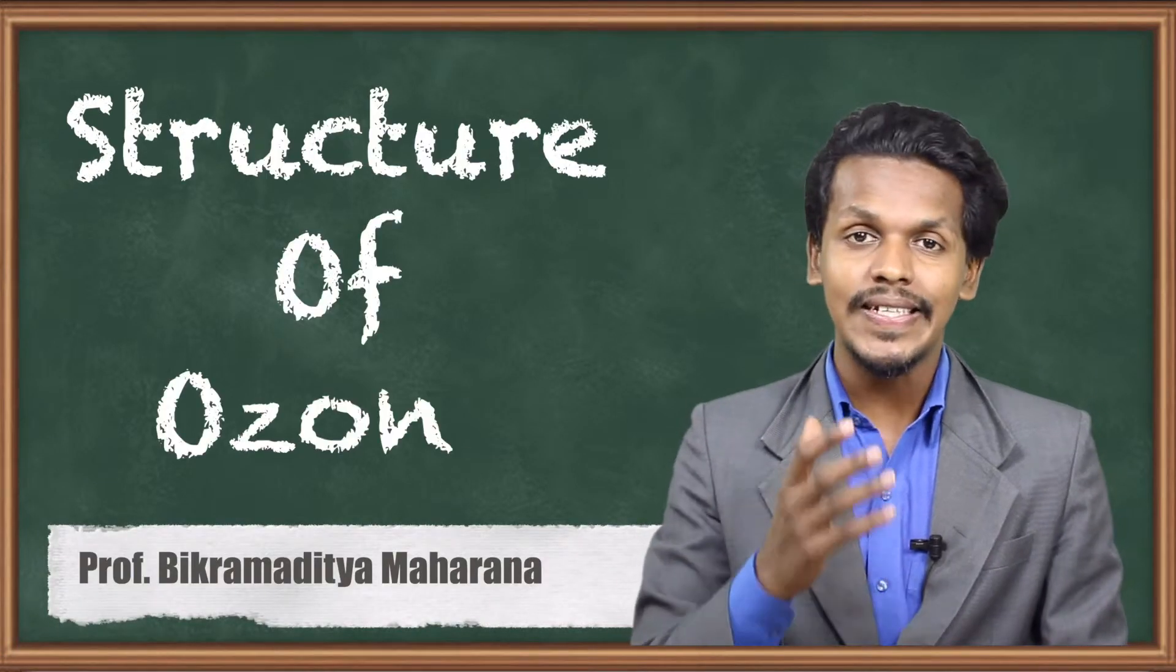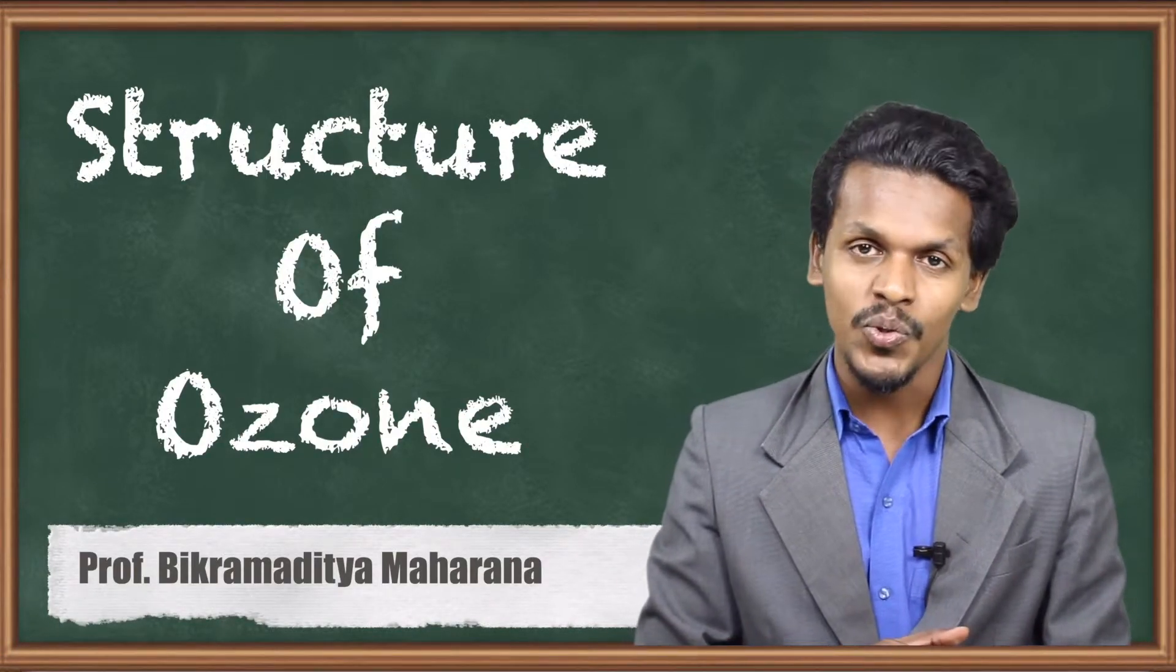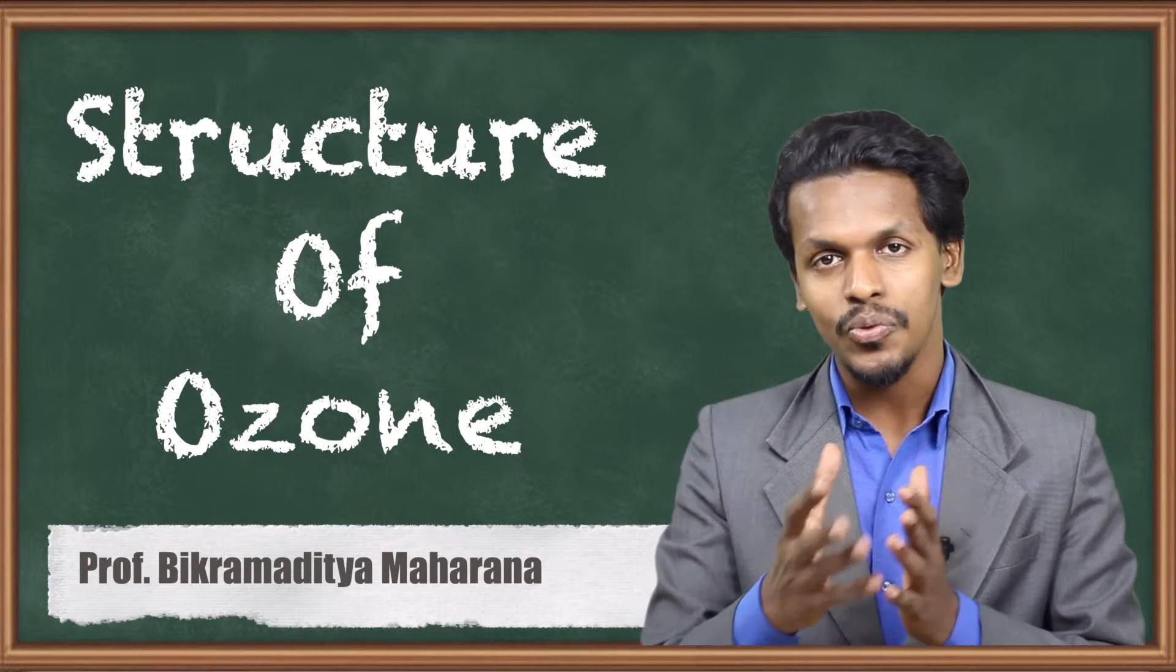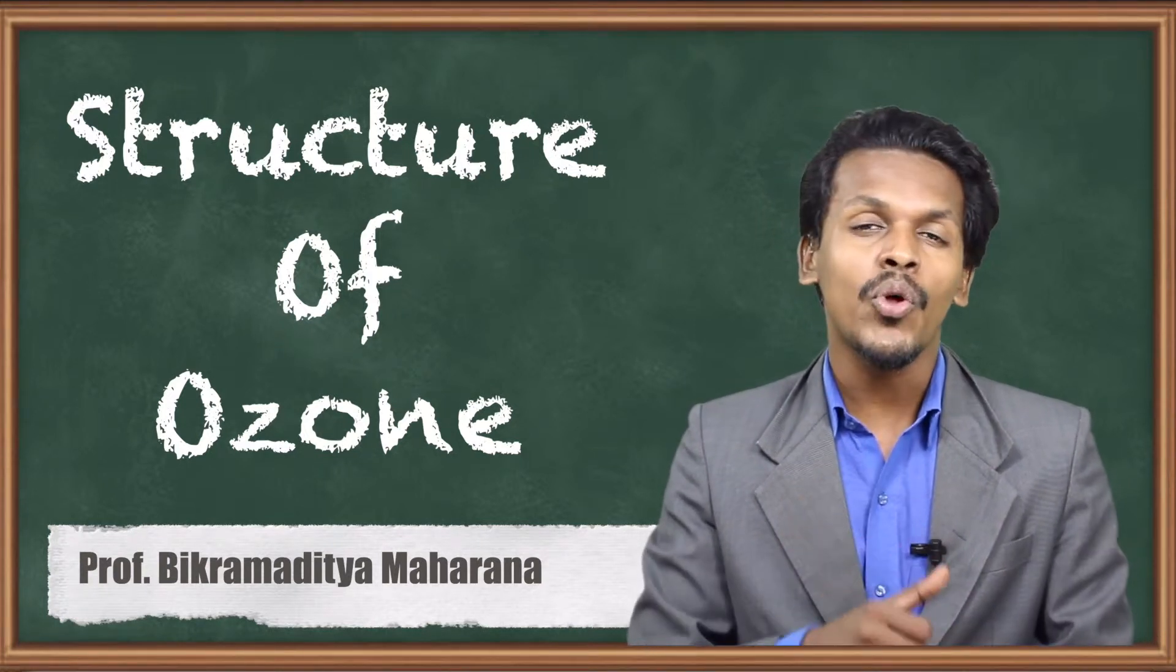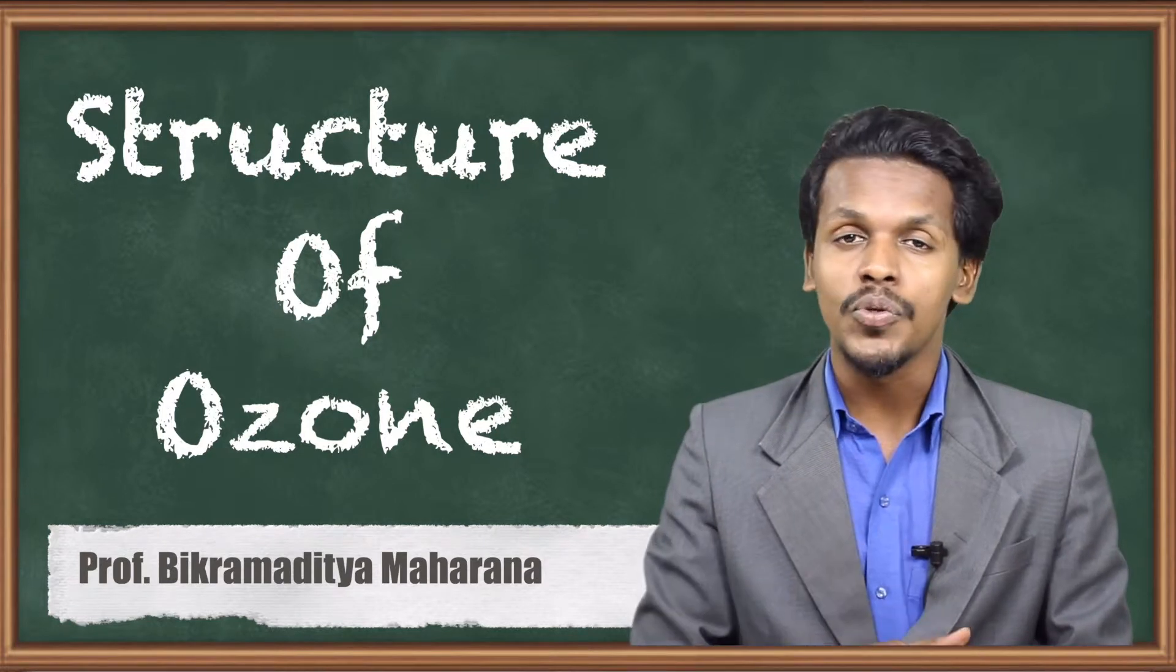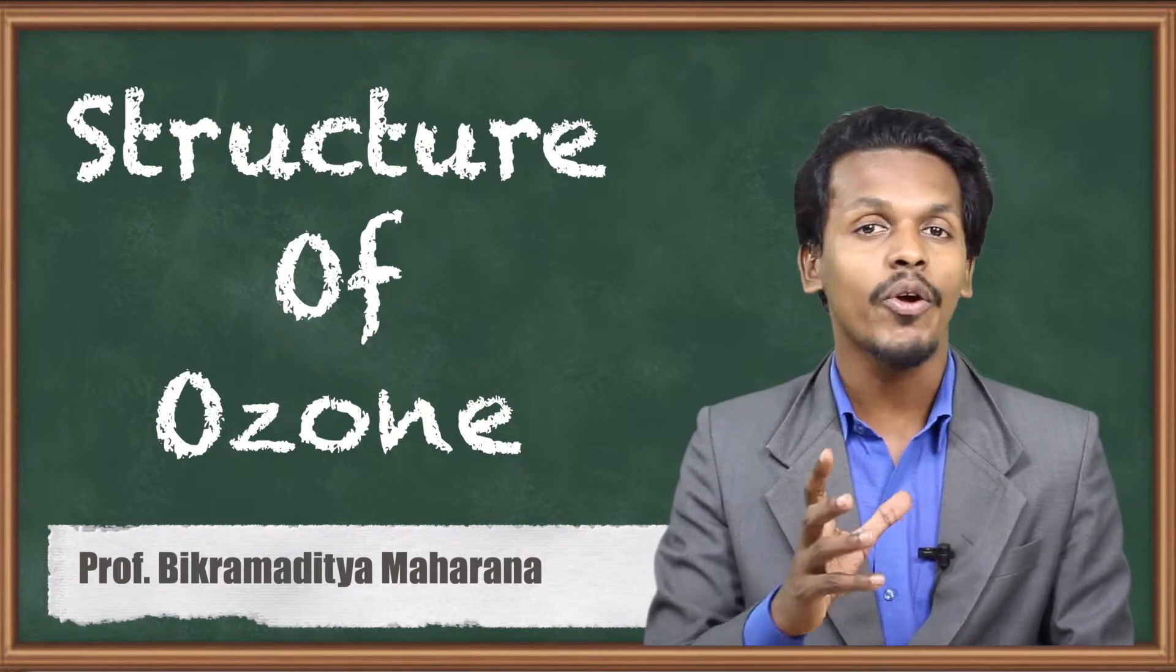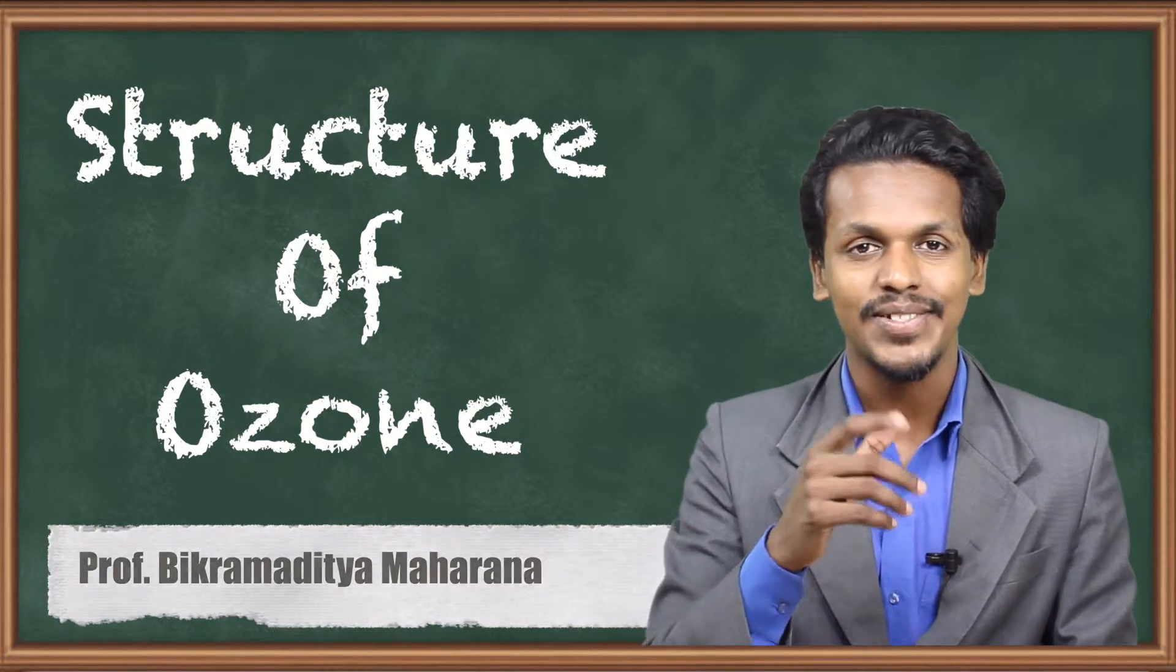Hi friends, in the previous example, we have considered the estimation of ozone and we have also got to know how ozone is being determined quantitatively. And now in this topic, we are going to talk about the structure of ozone. So what is the structure of ozone? What is the bond angle? That is what we are going to talk about in this topic. So now let's get started.